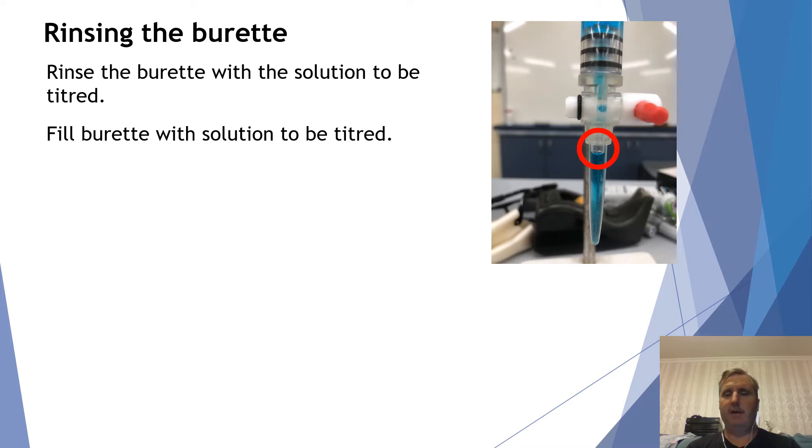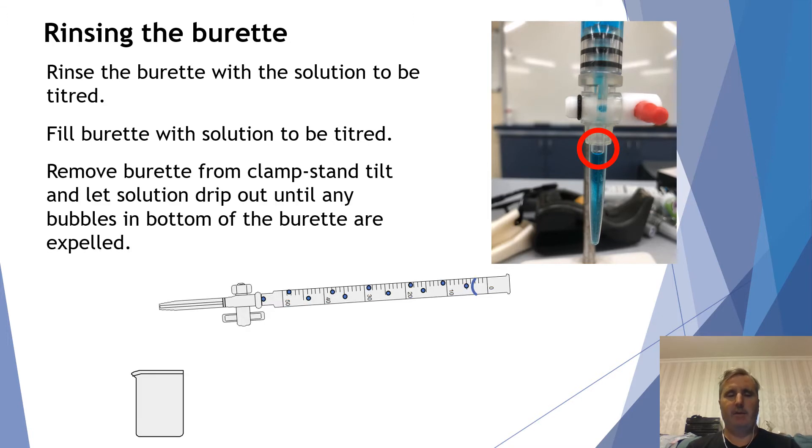So what we do is we take the full burette off the clamp stand and we tip it horizontally. Now because of how thin the burette is, the solution does not flow out that easily, so it's quite safe to do this. We hold it on its side and then we turn the tap a little bit and we drip the solution at the end of our burette. What happens is the bubble will come out when we hold it close to the horizontal and this means that our burette will no longer have any bubble on the bottom part of it and we're ready to start our titration.